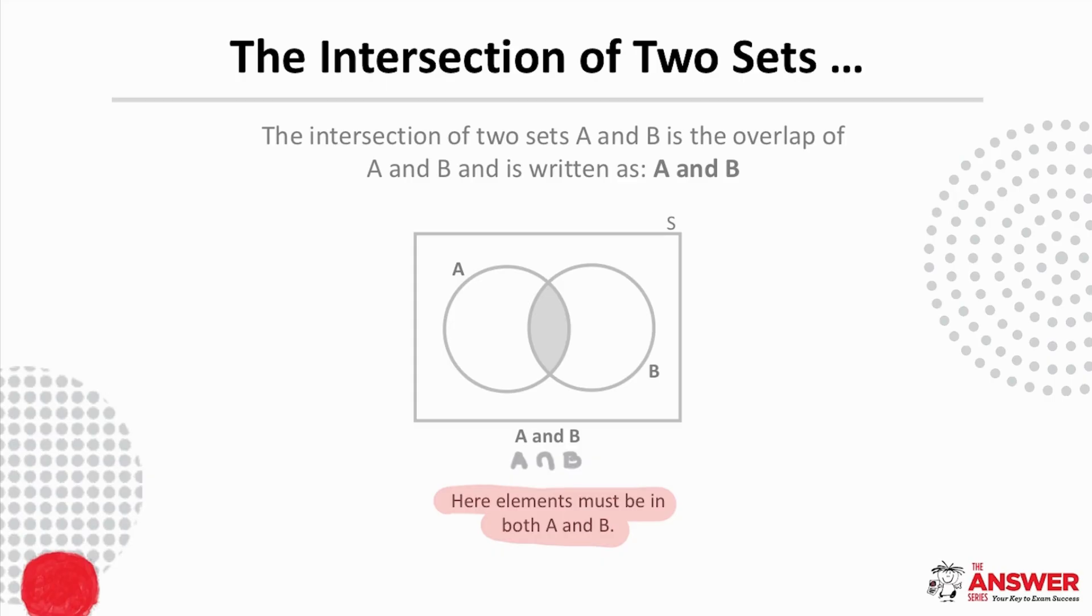A helpful way to remember which way round the notation goes is by thinking of this as an N for intersection as opposed to the U for union.